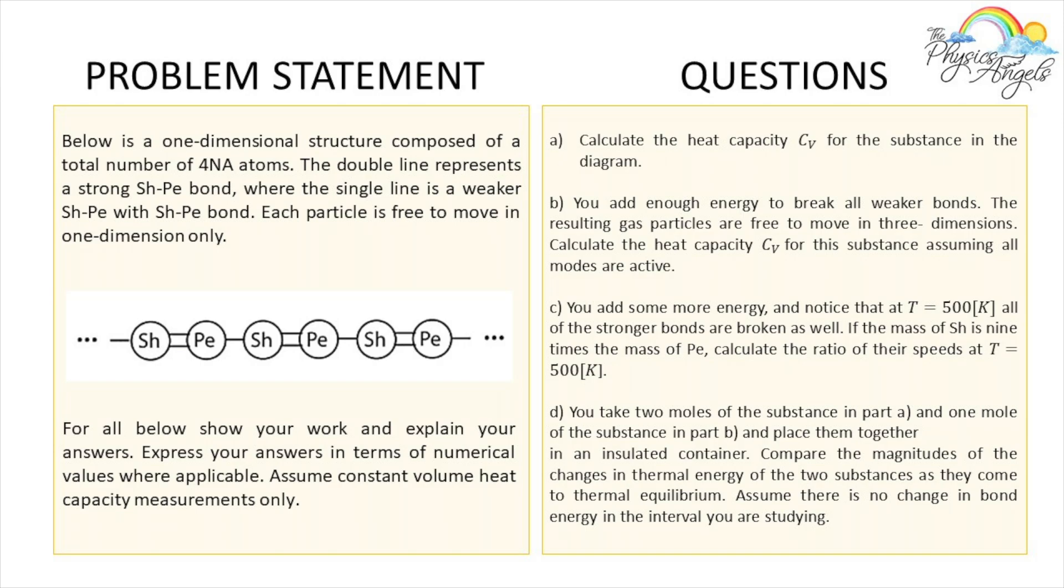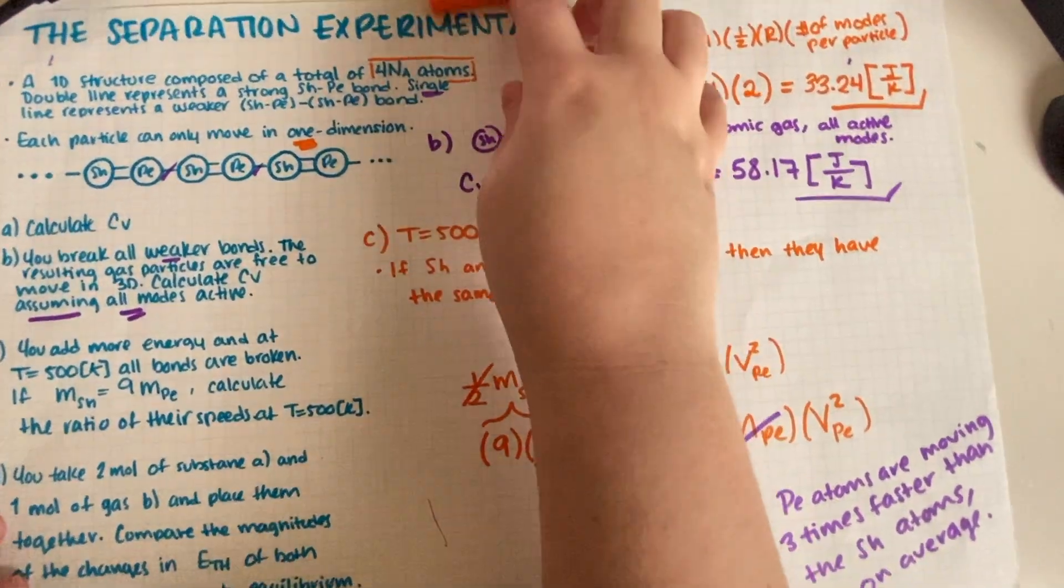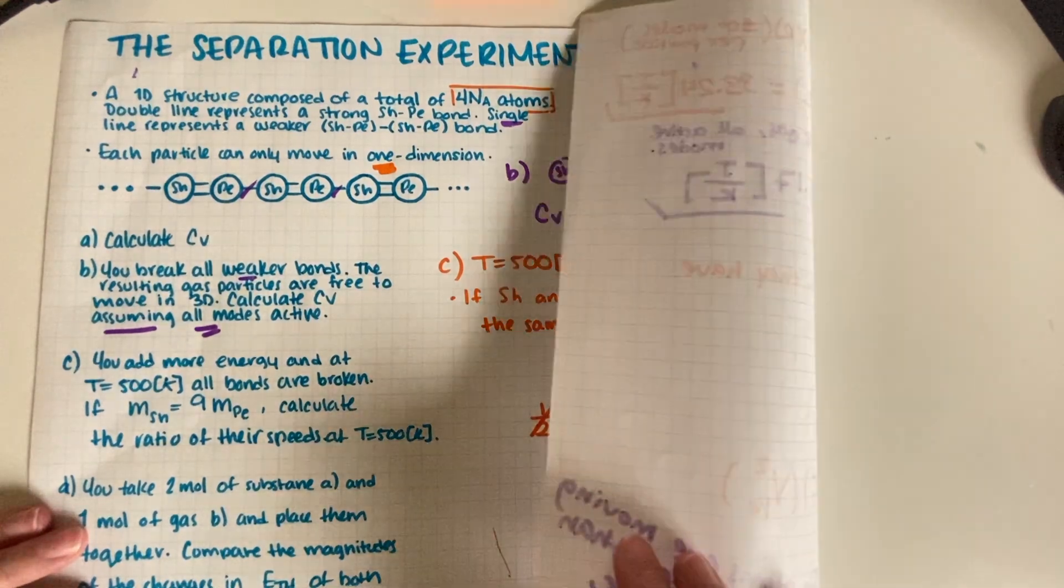Okay, so we do have a Part D. Part D is: you take two moles of the substance in Part A and one mole of the substance in Part B and you place them together in an insulated container. Compare the magnitudes of the changes in thermal energy of the two substances as they come to thermal equilibrium. Assume there is no change in bond energy in the interval you're studying.